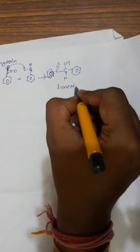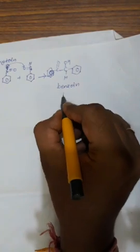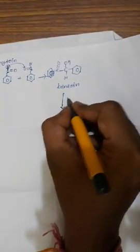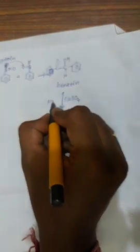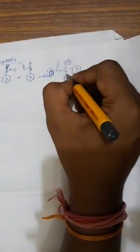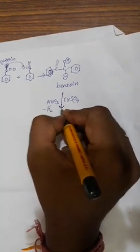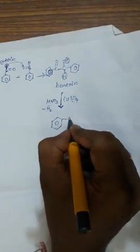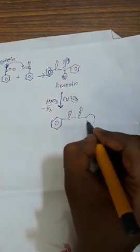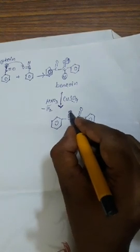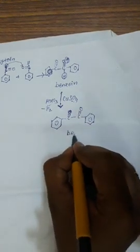Benzoin then undergoes dehydrogenation or oxidation. For this we use copper sulfate and nitric acid as oxidizing agents. In the presence of these, two hydrogen atoms are removed as H₂ gas. Due to the removal of these two hydrogens, a double bond is generated, converting the structure into one containing two carbonyl groups with two phenyl groups. This compound is called benzil.